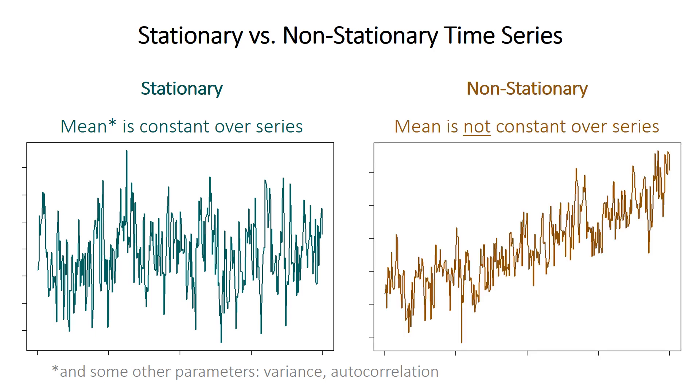In contrast, non-stationary time series have mean values that aren't constant. In the example here, the mean value increases over time. Of course, there are still these fluctuations, but the mean is increasing, which is an especially problematic type of non-stationarity because it often leads to these spurious relationships or correlations.